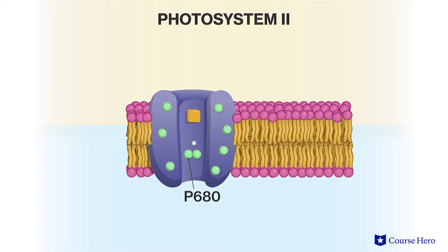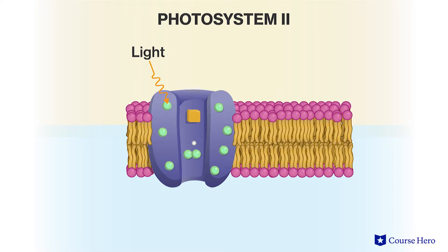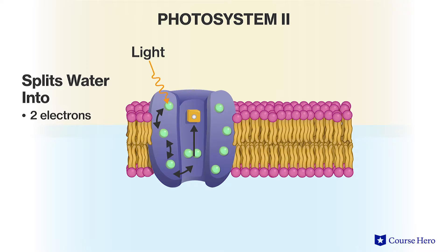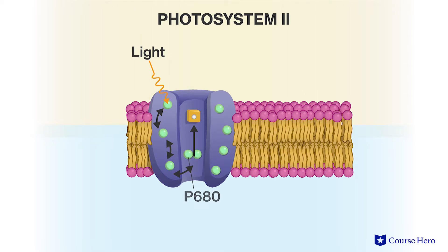The pair of chlorophyll molecules found in the reaction center complex of photosystem II are known as P680, because these molecules are best at absorbing light at a wavelength of 680 nanometers. When the energy being relayed in the harvesting complex reaches the P680 pair of chlorophyll molecules, it excites an electron to a higher energy state. This electron is transferred to the primary electron acceptor, resulting in a positively charged P680, denoted as P680+. An enzyme catalyzes the splitting of water into two electrons, two hydrogen ions, and an oxygen atom. The electrons from this reaction are transferred to P680, returning P680 to its initial state.